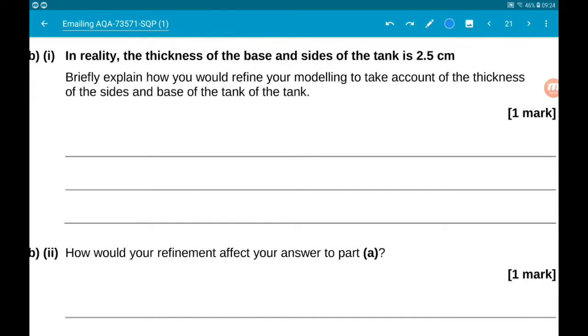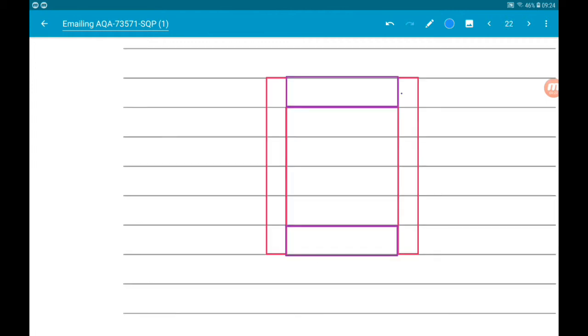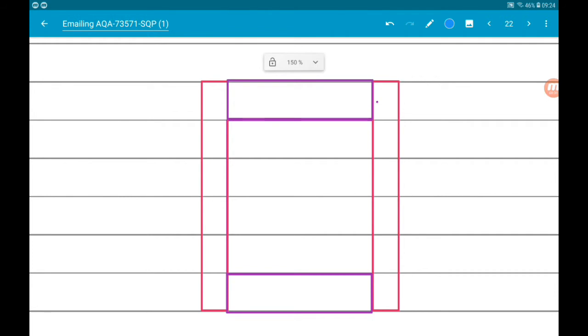For part b, we are told in fact the thickness of the sides and base is 2.5 centimeters. We want to briefly explain how we would refine our model to take into account this thickness. A diagram for this would be really useful and that is exactly what we have here. You can see that this middle part is our base. This is a bird's eye view. What we can see is for the sides to join together, there's going to need to be some overlap.